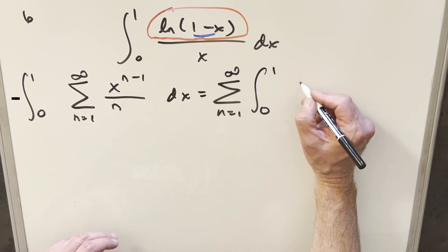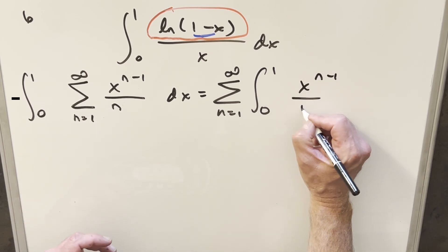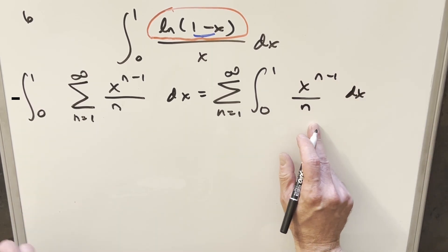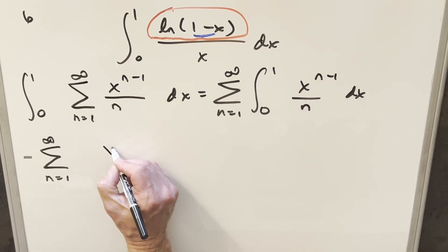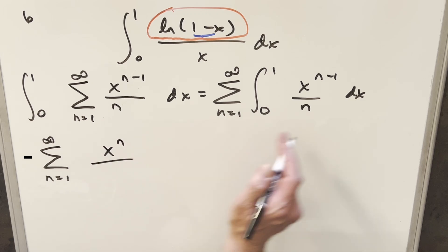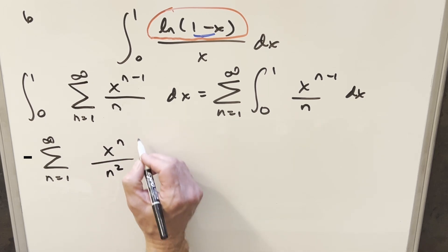We're going to have integral from zero to one, x to the n minus one over n. And we can just go ahead and integrate. So when we do this, adding a plus one on the exponent here, this is going to become x to the n. And then divide by the n times this n is going to give me an n squared here. We just need to evaluate this from zero to one.